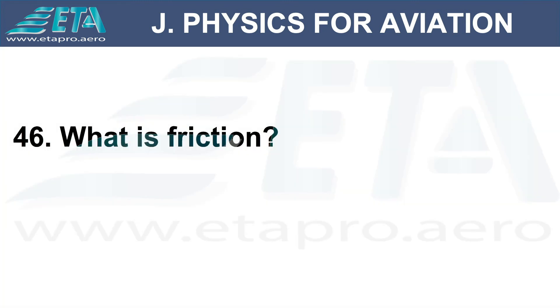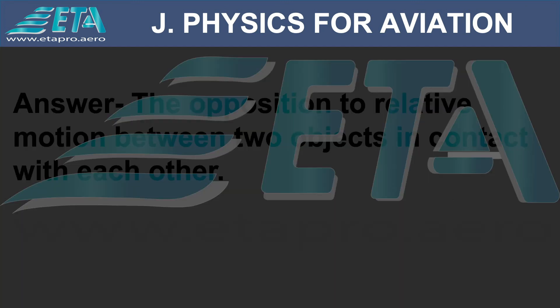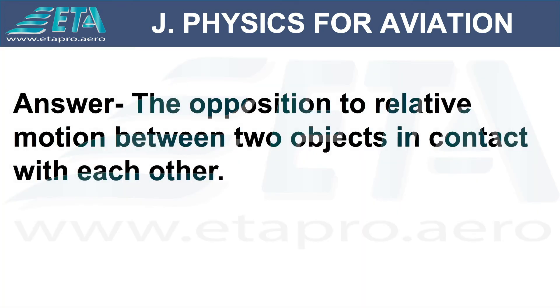What is friction? Answer: the opposition to relative motion between two objects in contact with each other.